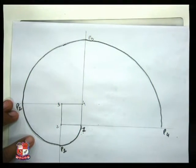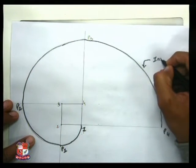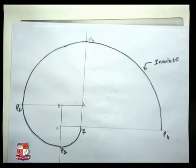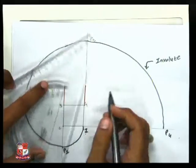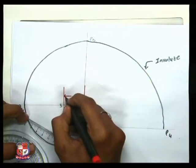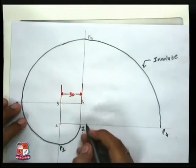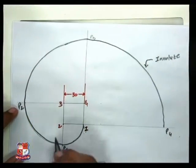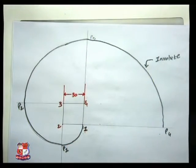So this is how you can draw your involute. Name the curve as involute and give the dimension of the square as side 30 mm. Name the points 0, 1, 2, 3, 4 and P1, P2, P3, and P4. So this is how you can draw an involute.